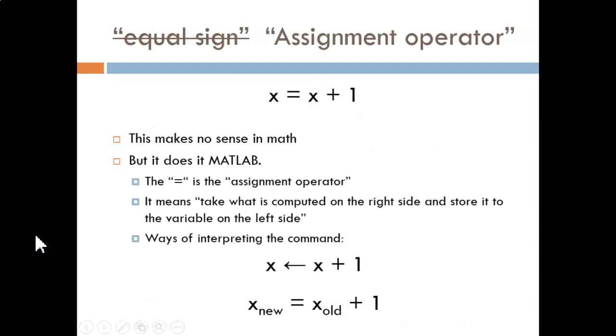The equal sign in MATLAB does not mean the same thing as an equal sign in math. The proper name for it is the assignment operator. The equation x equals x plus 1 is mathematically impossible. How can 4 be equal to 3? But here we see that it is possible in MATLAB.